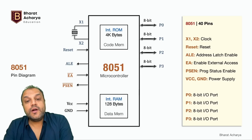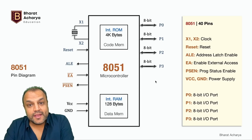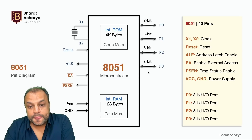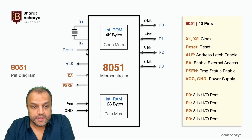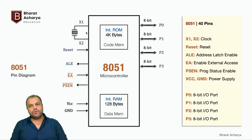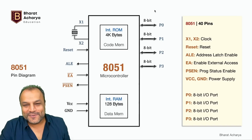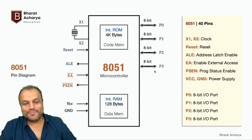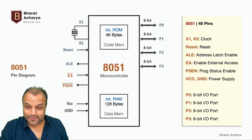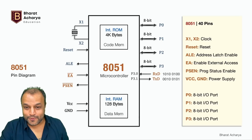If you count: 8 bits times 4 ports is 32, plus 8 others equals 40 — all 40 pins are accounted for. But the pin diagram isn't done, because many of these ports have alternate functions, and that's where all the interesting marks of 8051 are.